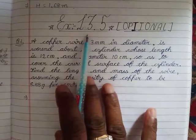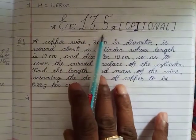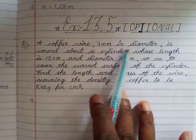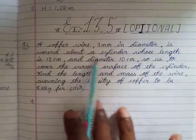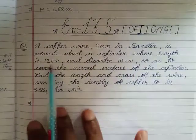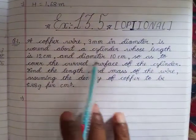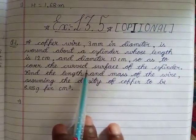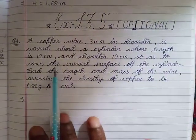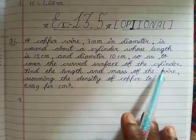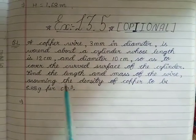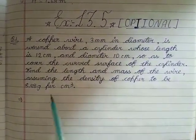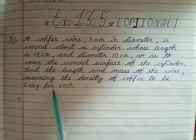Hello children, let's start with exercise 13.5. A copper wire 3 mm in diameter is bound around a cylinder whose length is 12 cm and diameter is 10 cm, so as to cover the curved surface area of the cylinder. Find the length and mass of the wire, assuming the density of copper to be 8.88 grams per centimeter.